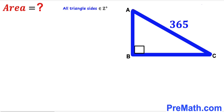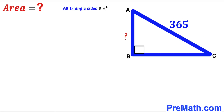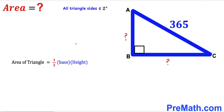Let's make an observation. The only information given to us is that the hypotenuse is 365, whereas the two legs are unknown. Since we are interested in calculating the area of triangle ABC, let's recall the area of a triangle formula: area is always equal to one half times the base times the height. We know one side is the base and the other leg is the height.